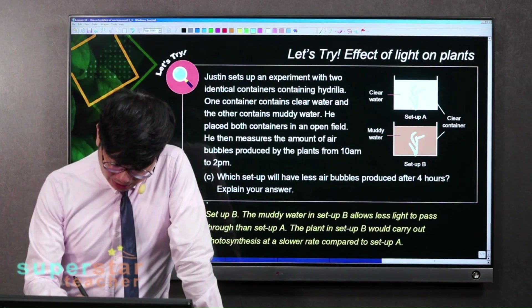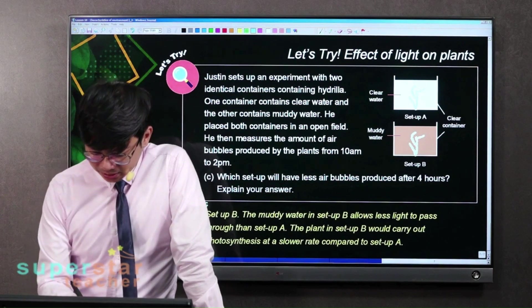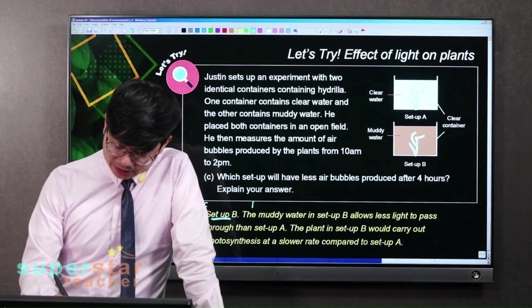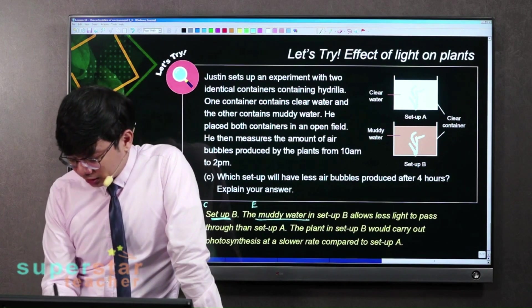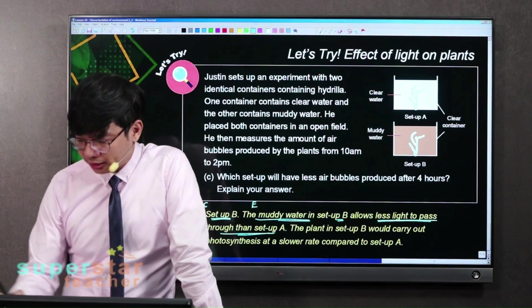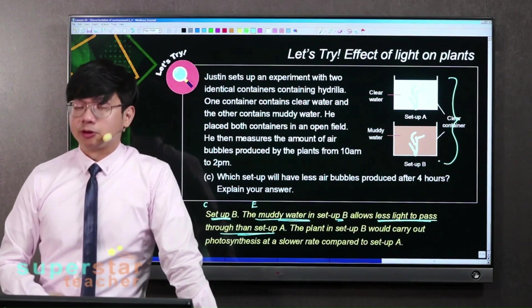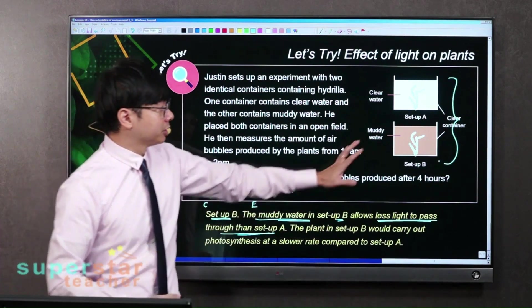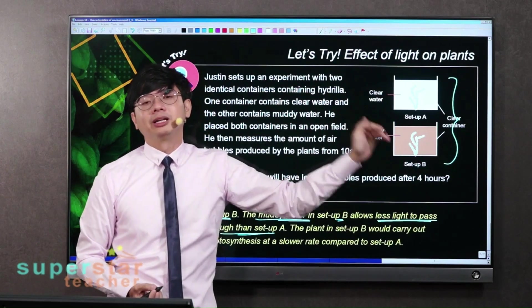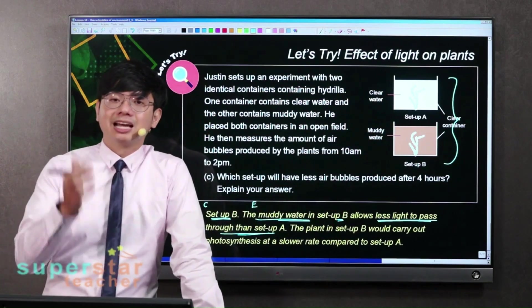So guys, this is the claim. Of course, it's setup B. This is the evidence. The muddy water in setup B allows less light to pass through. Isn't this what you see from the setup itself? From this picture, one is clear, one is muddy. So one allows more light to pass through, one allows less light to pass through. So that's the evidence.